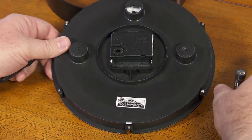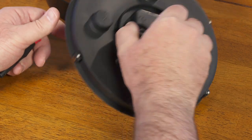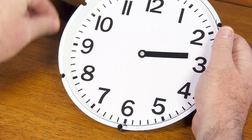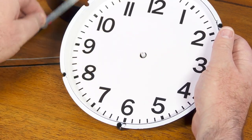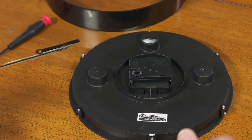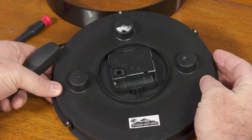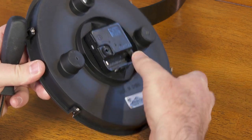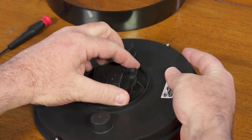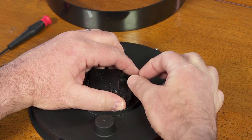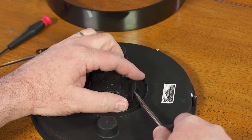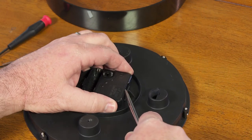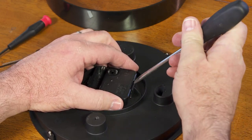Now we need to remove the movement. With a lot of movements like this, the hands just snap into place, so all I have to do is pull them off. The movement is held in by these little snap things, so I have to pull this apart a little bit and use a screwdriver to pry these tabs that are holding the movement in place.